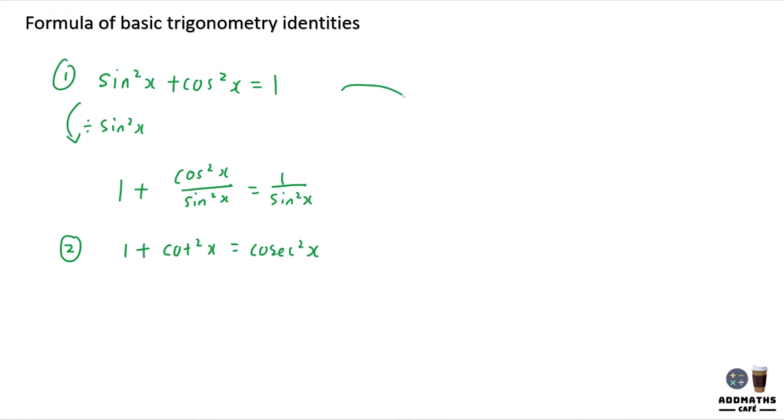Now the third formula: divide by cos square x, and it will give you sin square x plus cos square x plus 1 equal to 1 over cos square x. This will give you tan square x plus 1 equals sec square x. So this will be your third formula. You just need to remember these three formulas to do the basic trigonometry identities questions.